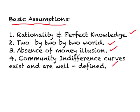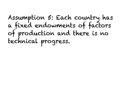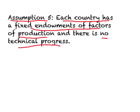Now we move on to the production side. The fifth assumption is that each country has fixed endowments of factors of production and there is no technical progress. When we say fixed endowments, it simply means we have a fixed number of factors of production: labor or workers, machines or capital, land and buildings, and entrepreneurs. We assume all of these are fixed for a country.